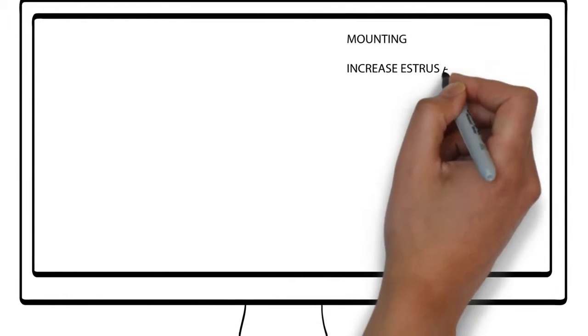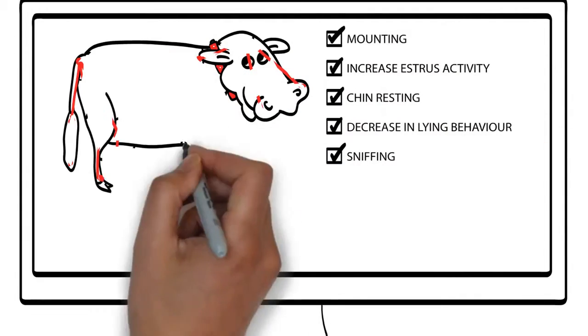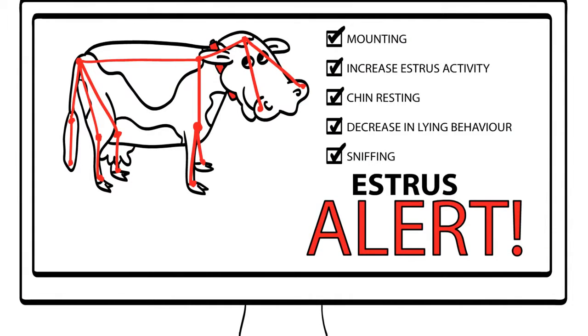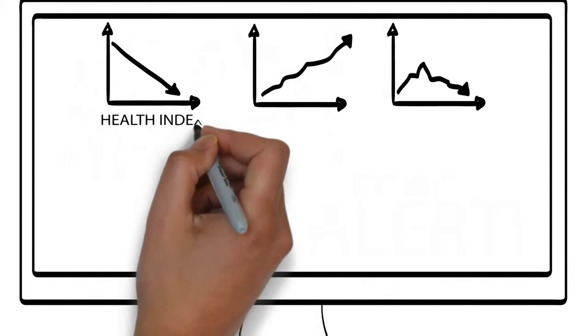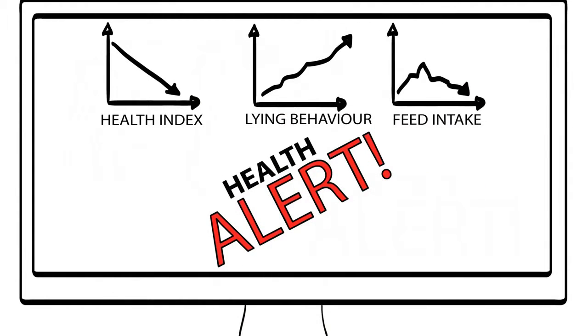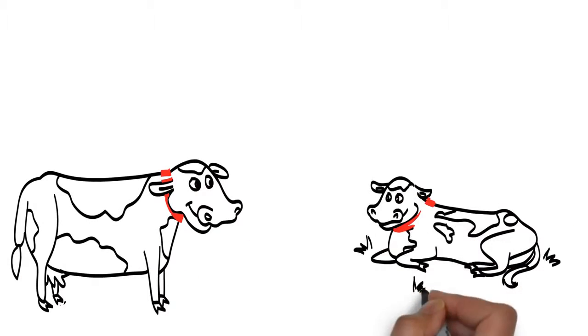Unlike heat detection products that only monitor activity, Herd Insights health monitoring solution uses a revolutionary new approach, combining gesture recognition and multi-metric analysis to deliver accurate, reliable, and timely estrus and health alerts. Every millisecond the cow's behavior is monitored by a smart collar.